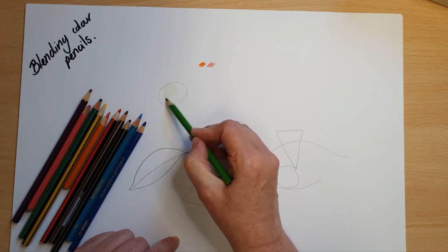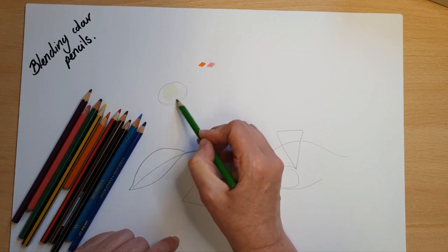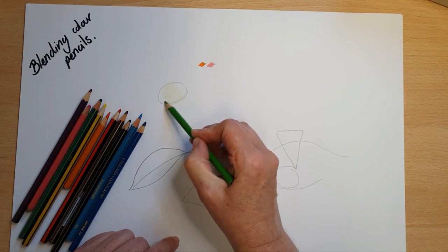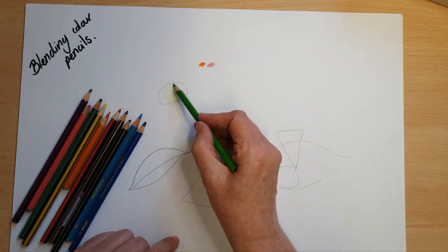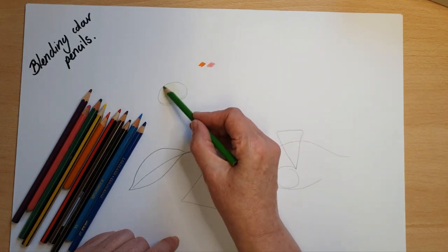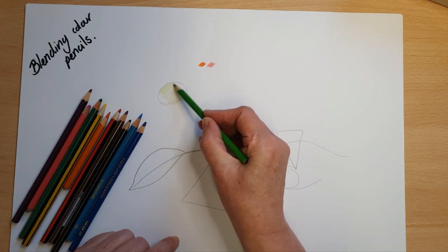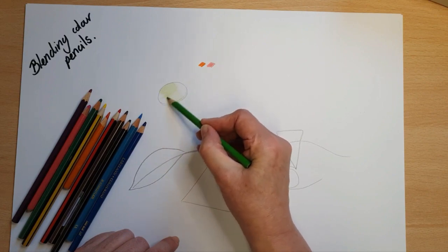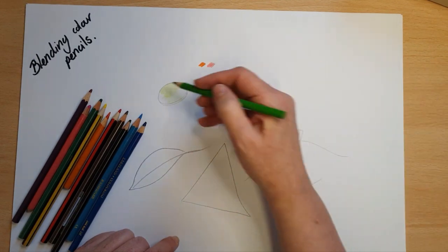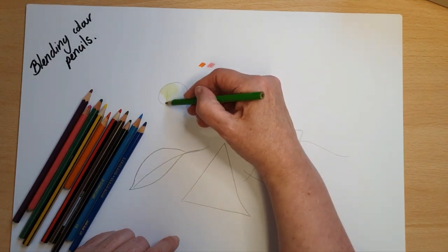I'm not going to press down really hard straight away, I'm just going to build up layers of color. So there's a very light green layer now gone in in the middle of that shape. I'm curving the strokes around the edge where the line's curved, and where I go over again in a slightly different direction I get a slightly stronger color.